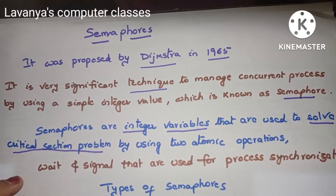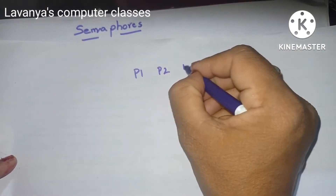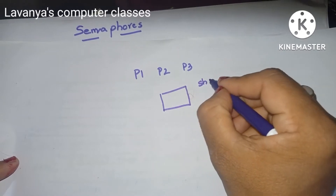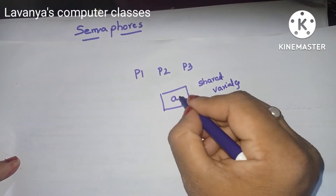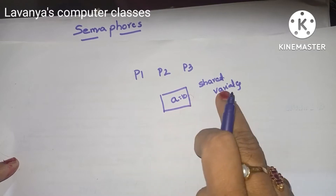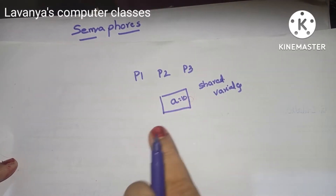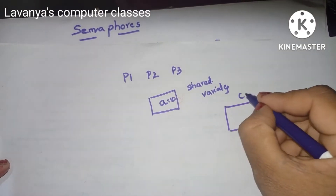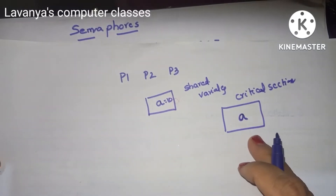Semaphores are used for concurrent execution. Concurrent execution means multiple processors execute simultaneously. For example, P1, P2, and P3 are processors using the same shared variable — for example, a variable equal to 10. All processors need this variable, so it is known as a shared variable, stored in a place called the critical section.